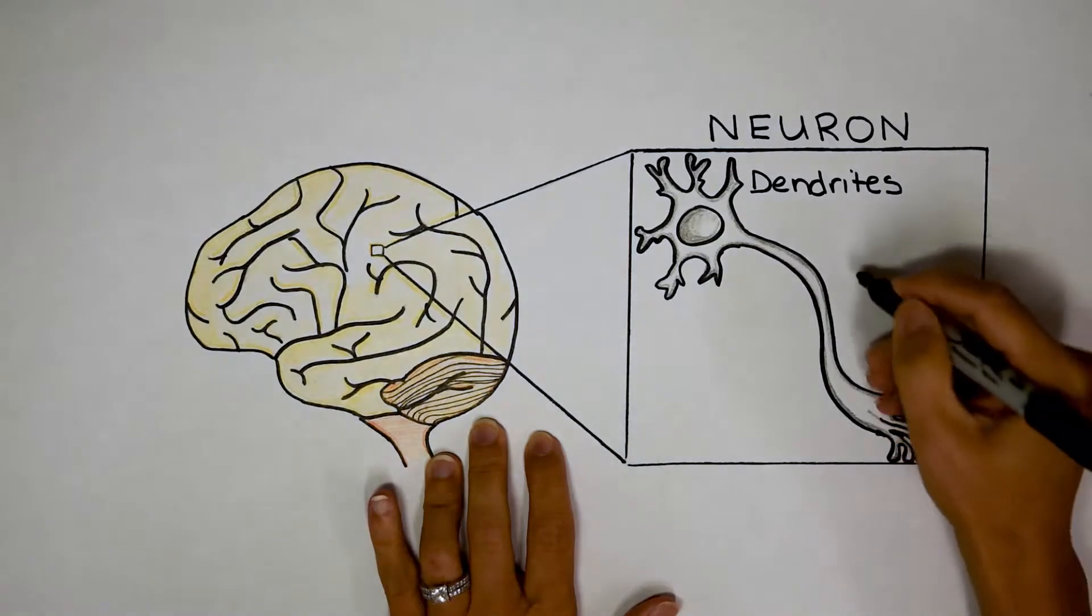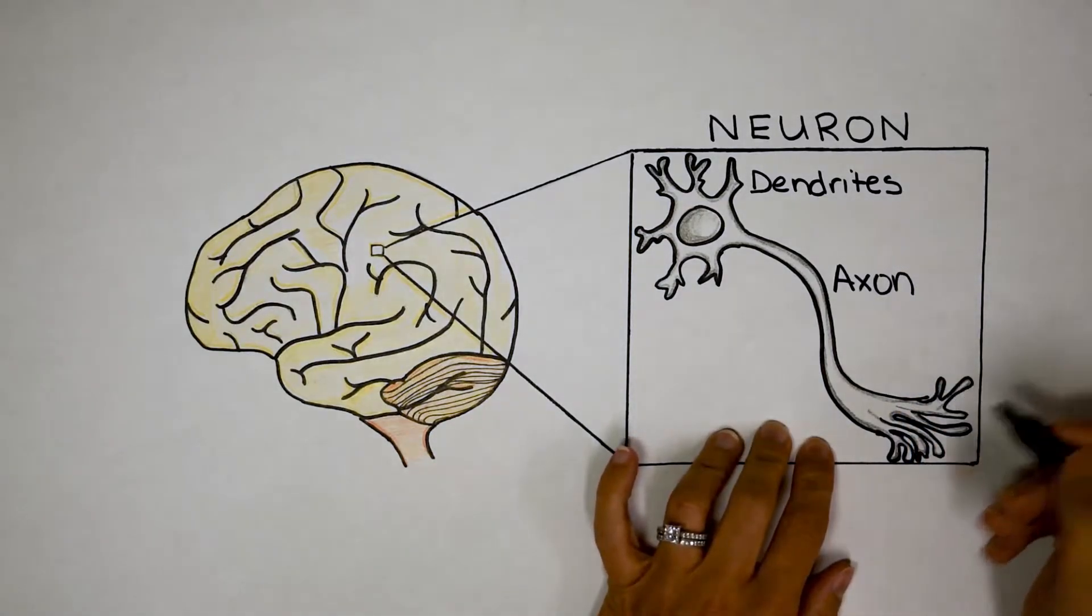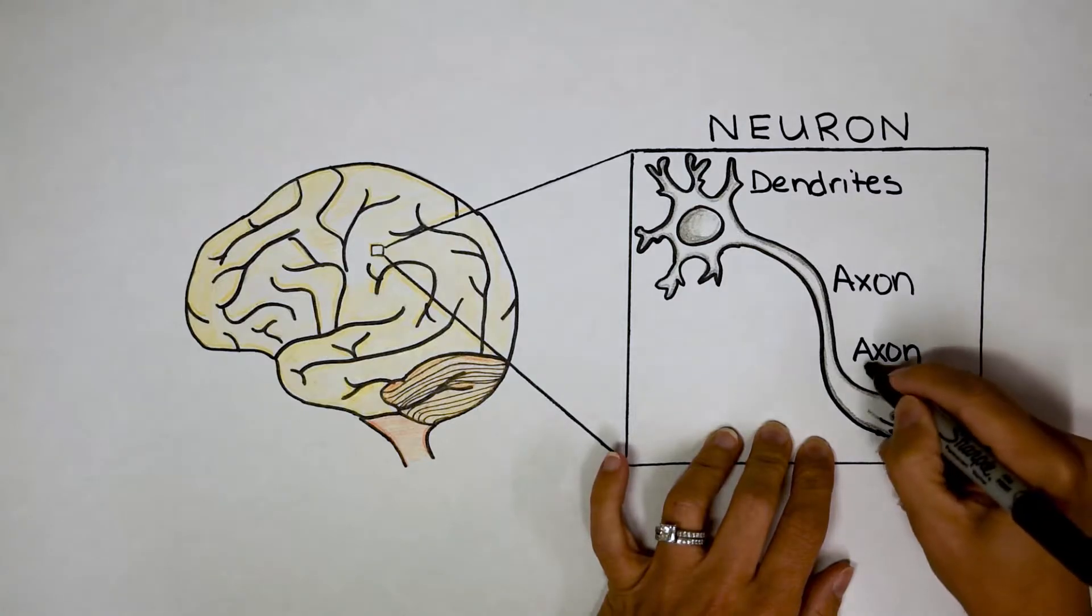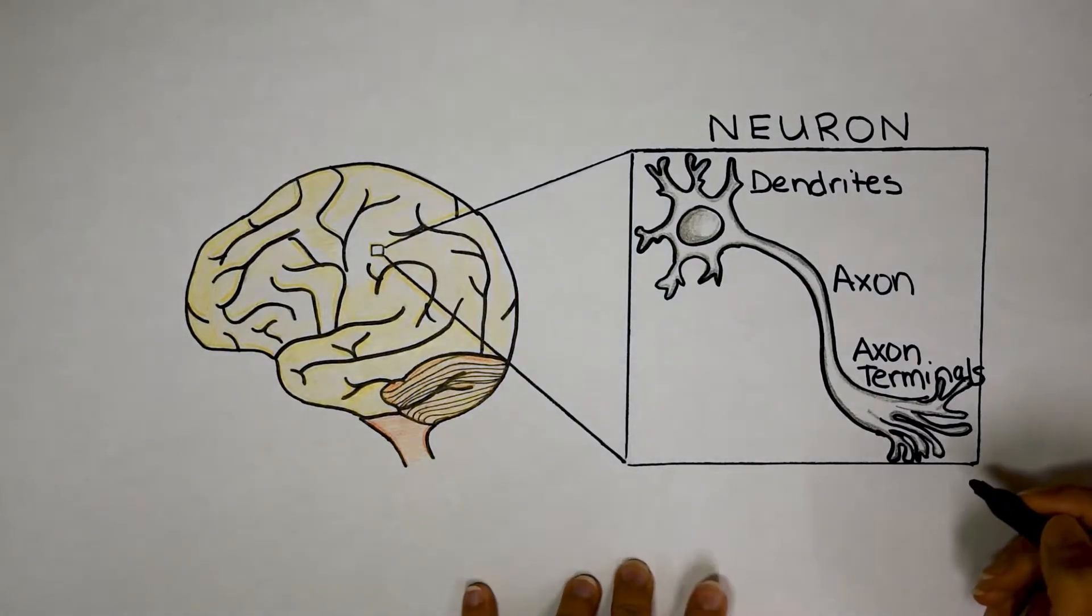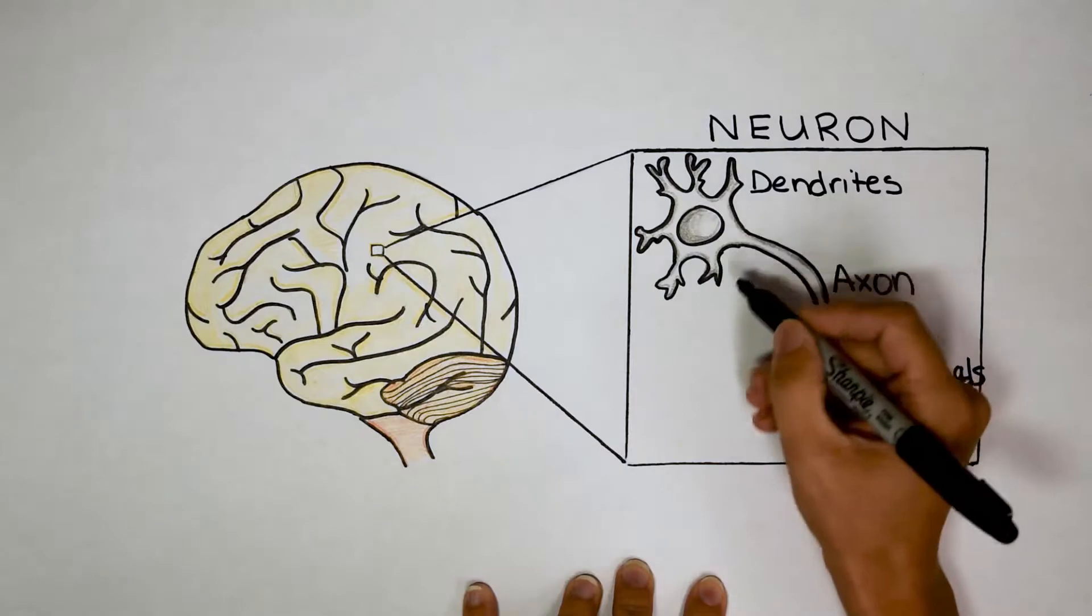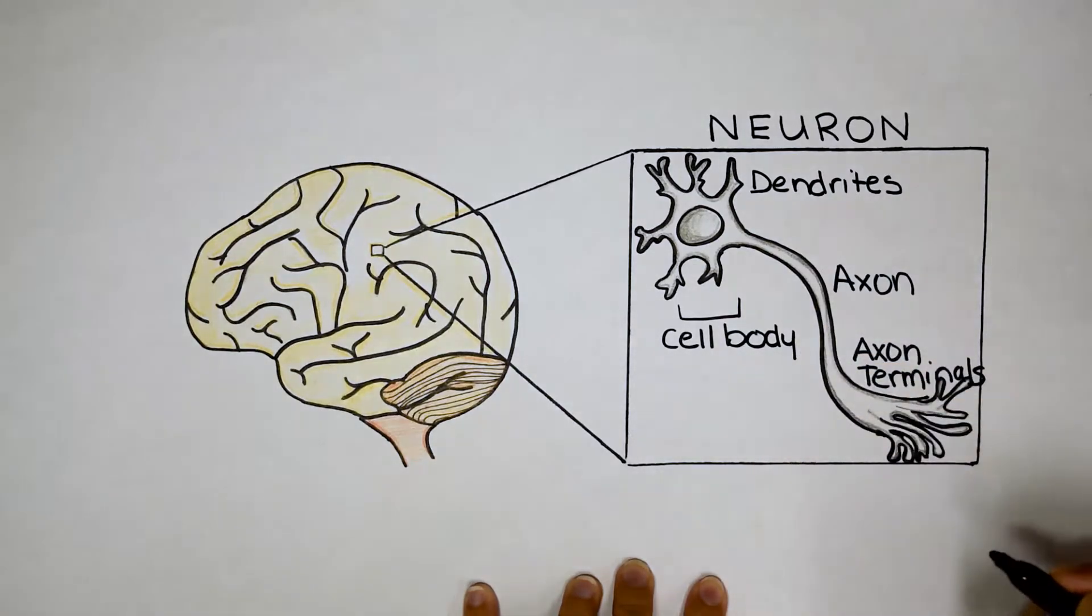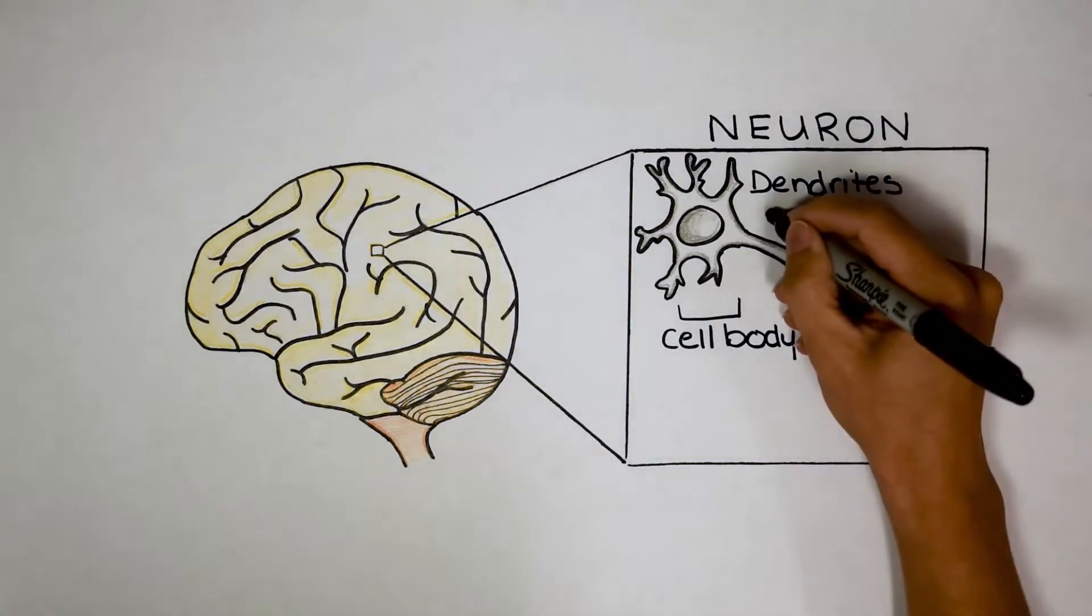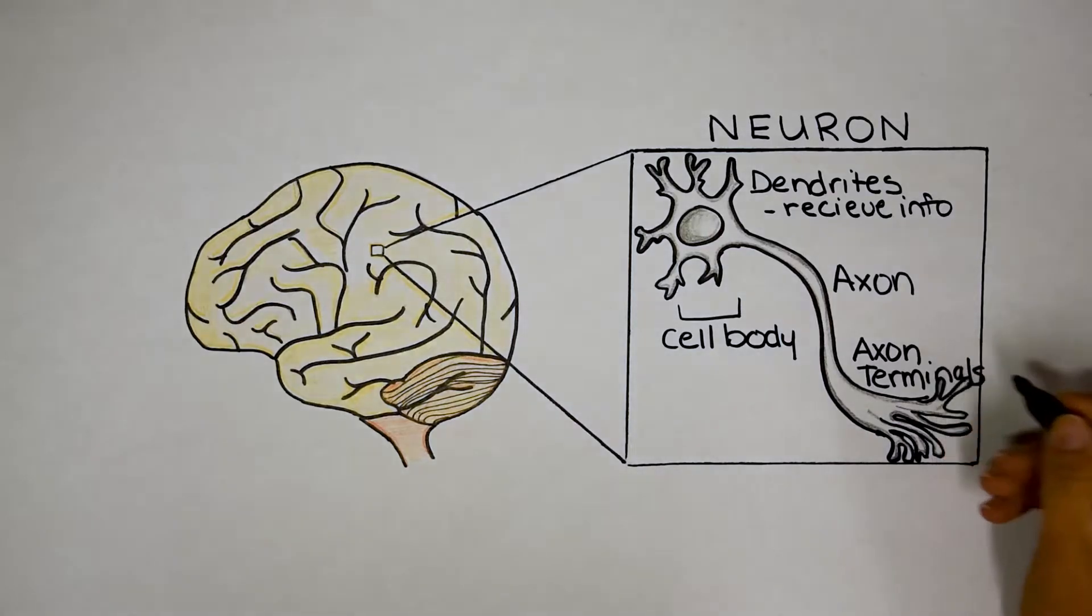And then there's this long connector. This is called the axon. And at the bottom, the axon ends. And another word for end is terminate. So at the very end here, these are called axon terminals. One other thing I want to point out to you here is this region around the circle. This circle is the nucleus where the DNA of the neuron is contained and around it is called the cell body. So you might be wondering, how does a neuron work? Basically, the dendrites receive information, and the axon terminals send information.